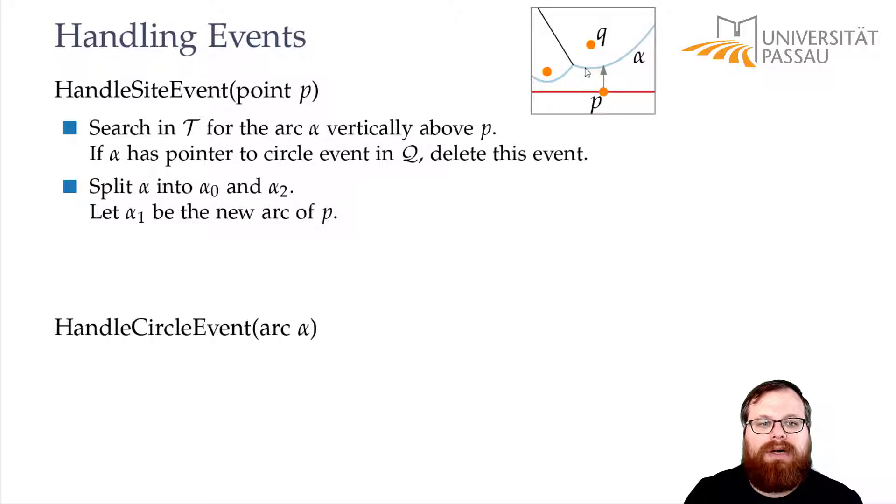So this is now alpha 0, this is alpha 1 and this is alpha 2. And in the data structure, we had one leaf that is exactly our parabola alpha that corresponds to a point q. And that we also have to split into three parts.